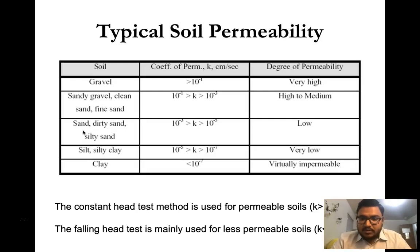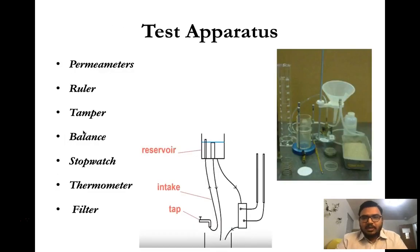The constant head method is used for more permeable soil, that means if the permeability is more than 10 to the minus 4 centimeter per second. The falling head method is mainly used for less permeable soil, that means the permeability coefficient will be less than 10 to the minus 4 centimeter per second. This is the test apparatus that is needed for constant head permeability test.